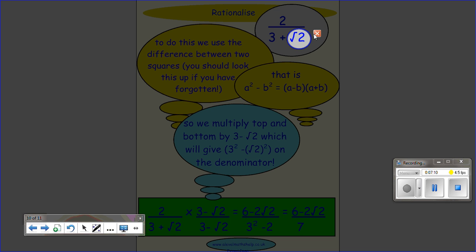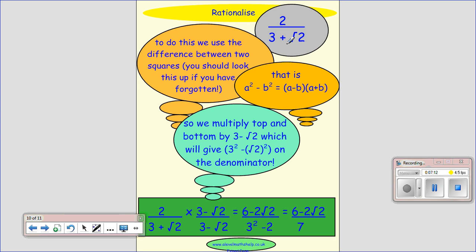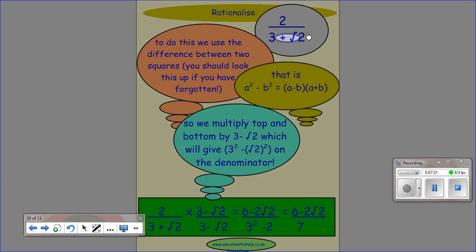If we multiply this by 3 minus root 2, we're going to get 3 squared minus root 2 squared. And then the middle terms disappear. So we end up on the bottom, 9 minus 2, which is 7.